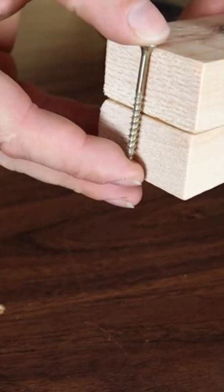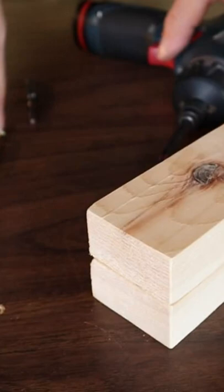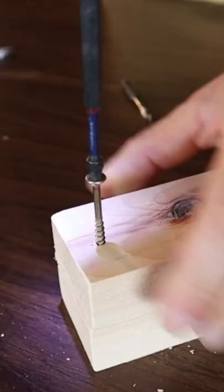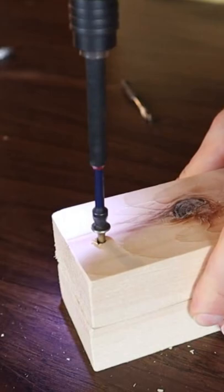If you have threads all the way to the top, sometimes what that causes is the pieces just spread apart. Another way to prevent that is to drill a pilot hole in the first piece. It goes together nice and snug.